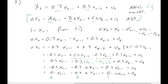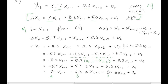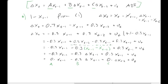That was part a of the question. Part b: what is the significance of testing the hypothesis H₀: a ≥ 0 against the alternative H₁: a < 0?